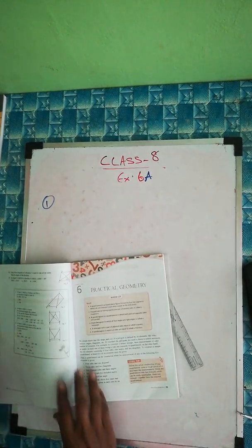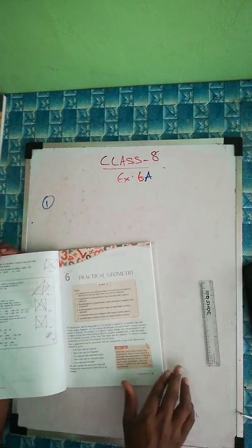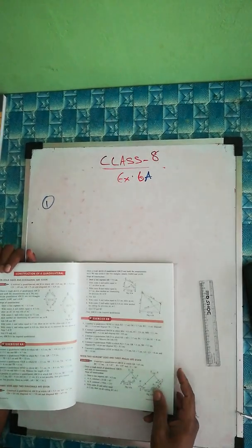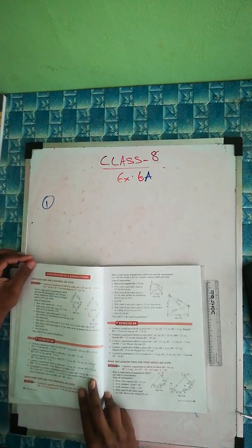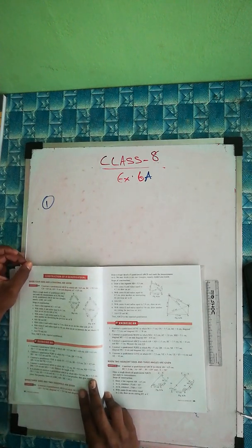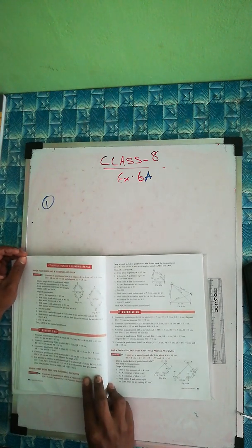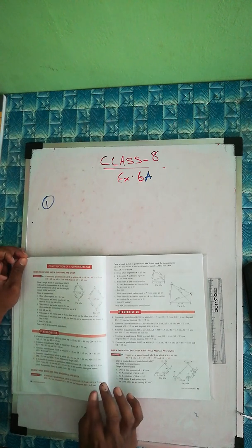Class 8, Chapter 6 Practical Geometry. We'll do the first exercise — construction of a quadrilateral, Exercise 6A. The first question: construct a quadrilateral ABCD in which AB is 4.2 cm, BC is 4.8 cm, CD is 6.3 cm, AD is 3.1 cm, and BD is 6.7 cm.